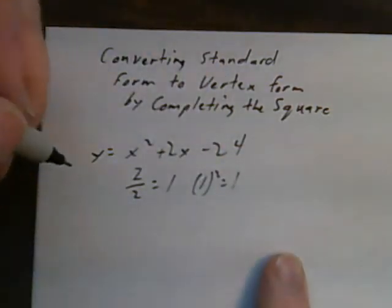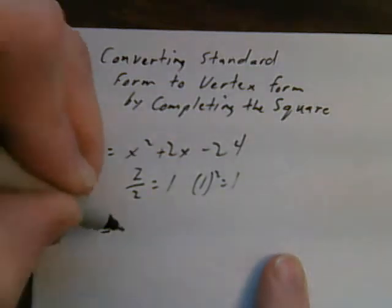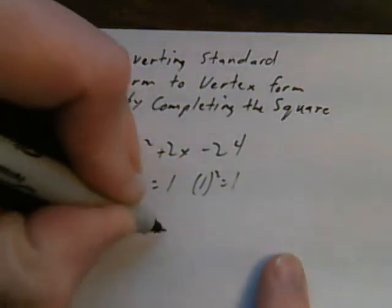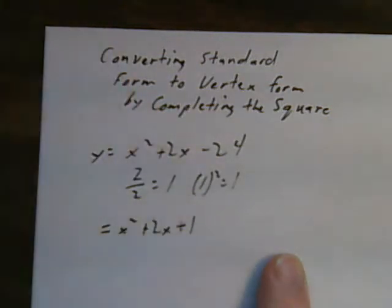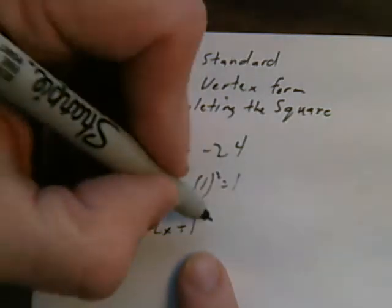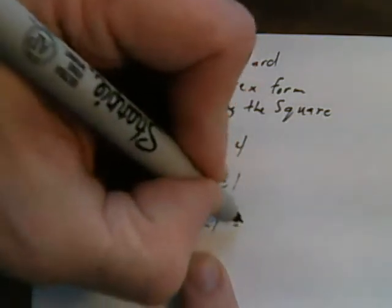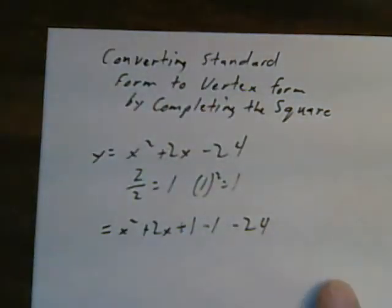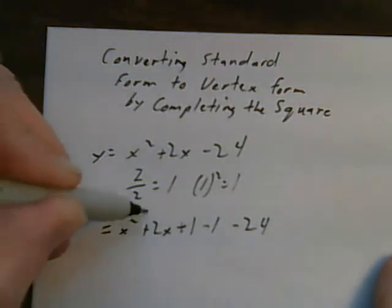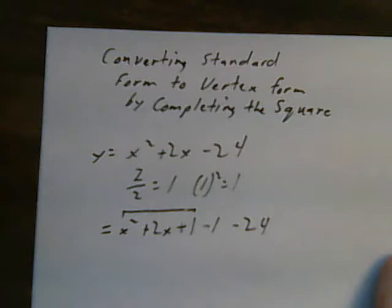Now I rewrite my equation. So now I've got x squared plus 2x. Now I'm going to add in that 1. That 1 was not in the original equation. So I'm going to subtract it. And then I've got the minus 24. Now the object of completing the square is to get this first part down to what looks like a perfect square.